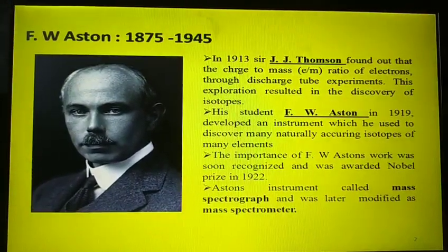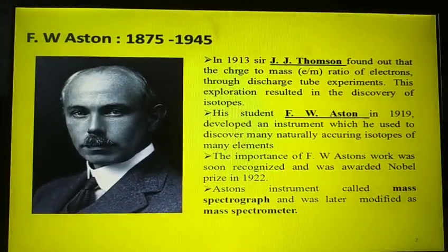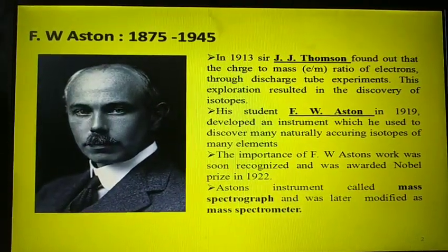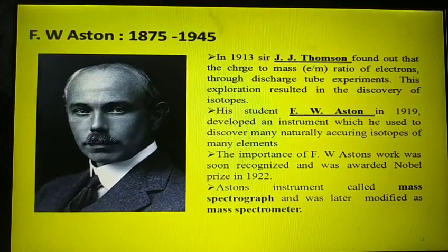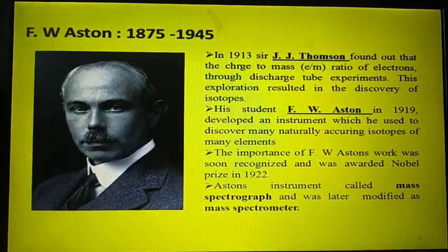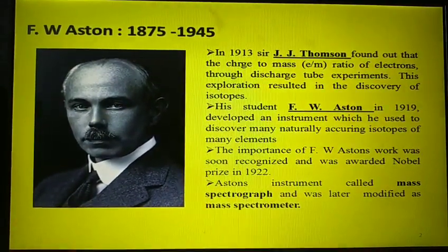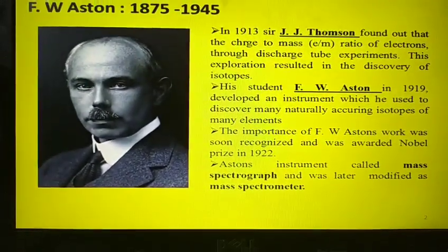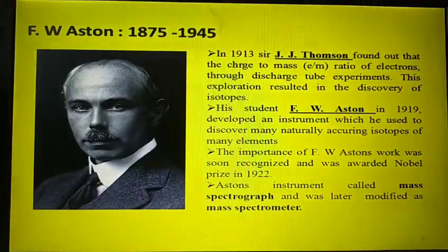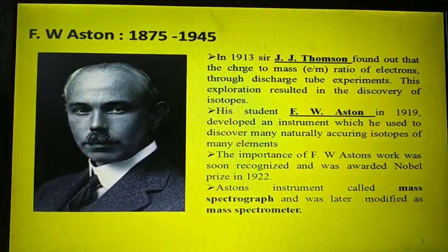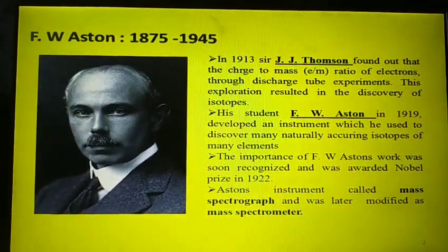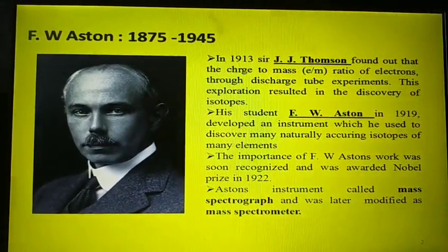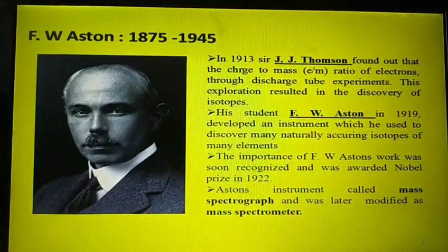J.J. Thomson found the charge to mass ratio of electrons through discharge tube experiments. This exploration resulted in the discovery of isotopes. His student F.W. Aston in 1919 developed an instrument which he used to discover many naturally occurring isotopes of many elements. The importance of F.W. Aston's work was soon recognized and he was awarded the Nobel Prize in 1922.